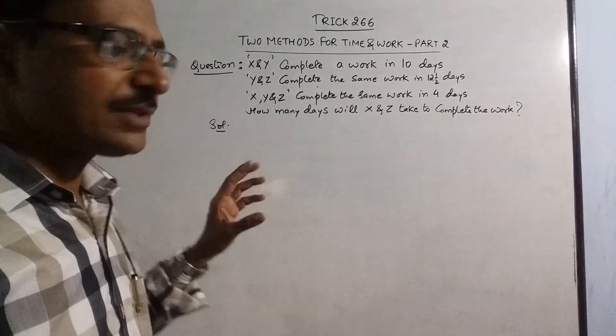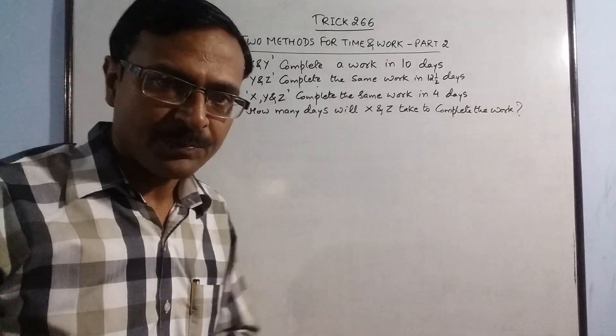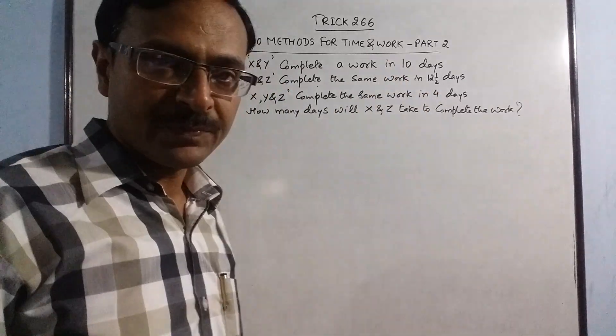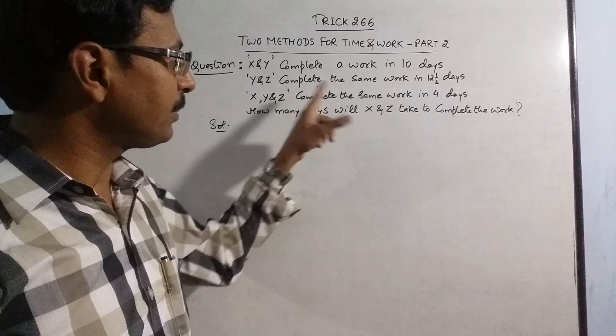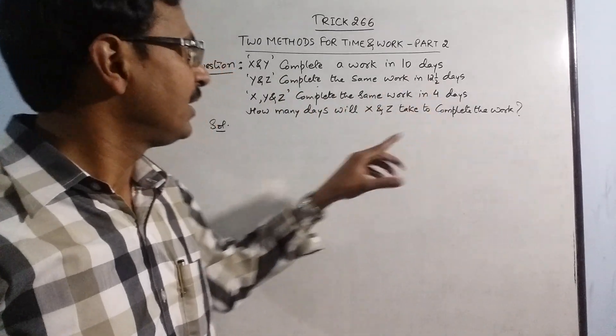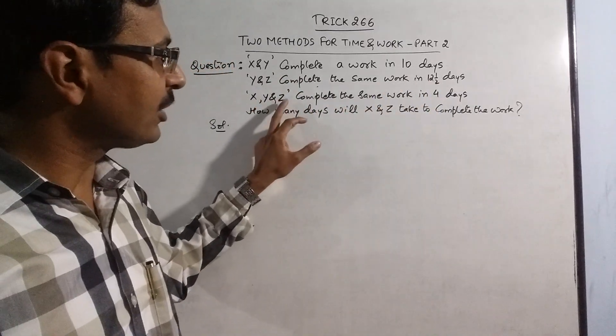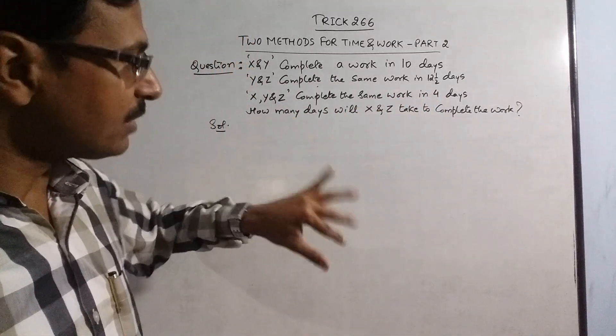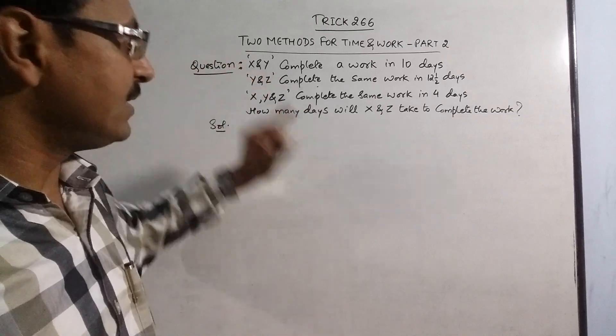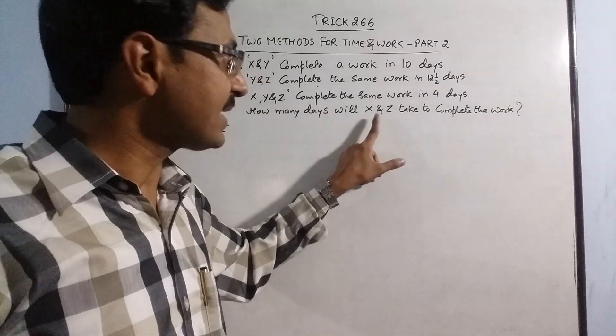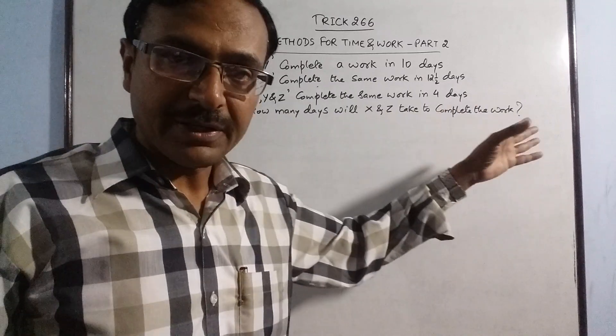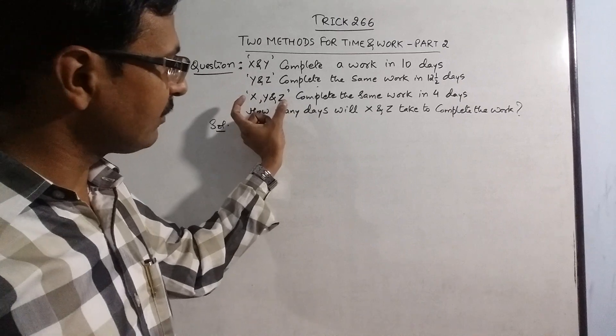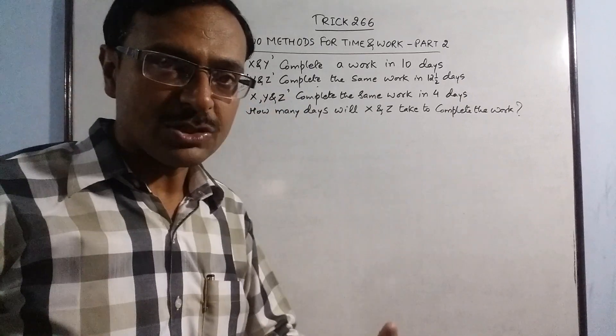The problem goes like this: there are three persons x, y, and z. When x and y pair up to complete the work they complete it in 10 days. When y and z pair up they complete it in 12 and half days. And when all three of them work together they complete the work in 4 days. Now I need to find out the third pair, that is x and z, how many days will x and z take to complete the work.